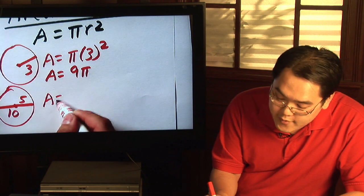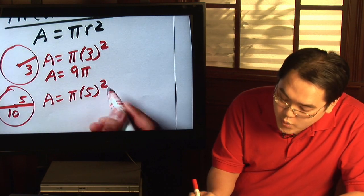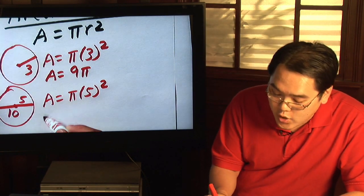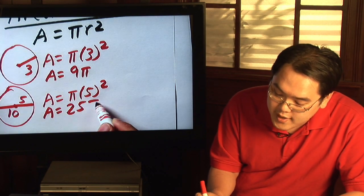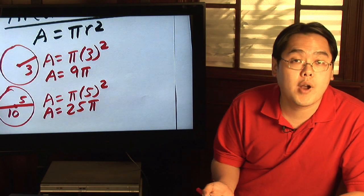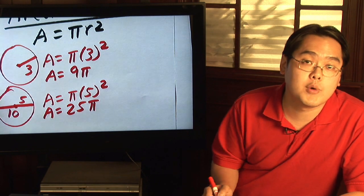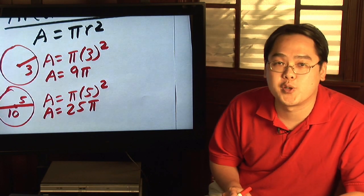So all you need to do is plug in 5 where the R is, so A equals pi times 5 squared. Now, 5 squared is 25, so for all intents and purposes, the area of this particular circle is 25 pi. That is the exact value, but if you want to find the approximation of it, then just replace pi with 3.14 and do the multiplication, and you'll have the approximate value for the area of that circle.